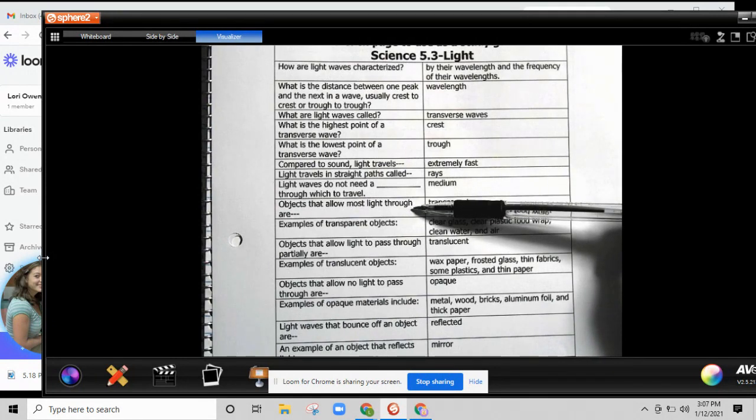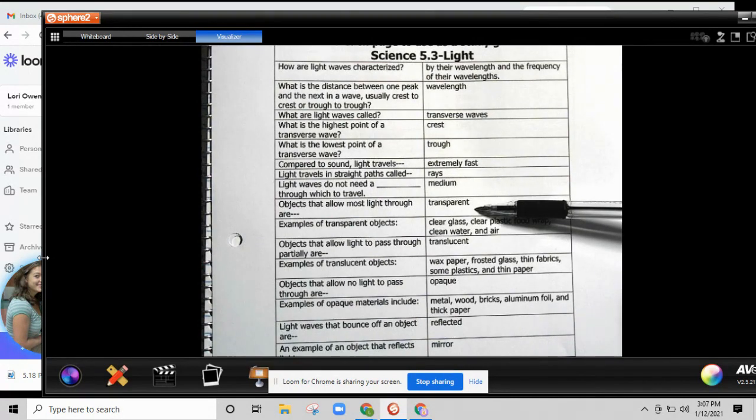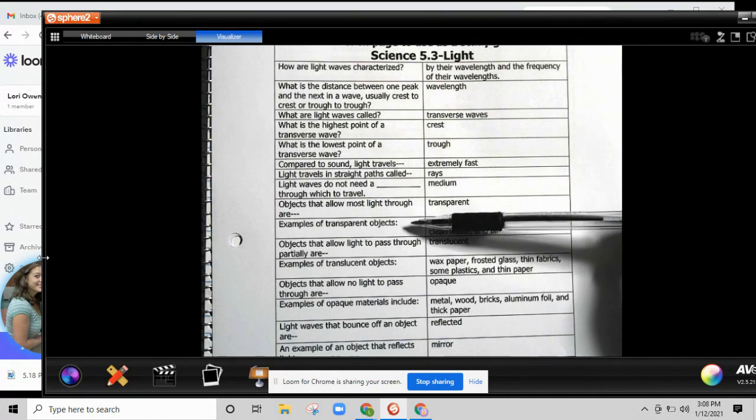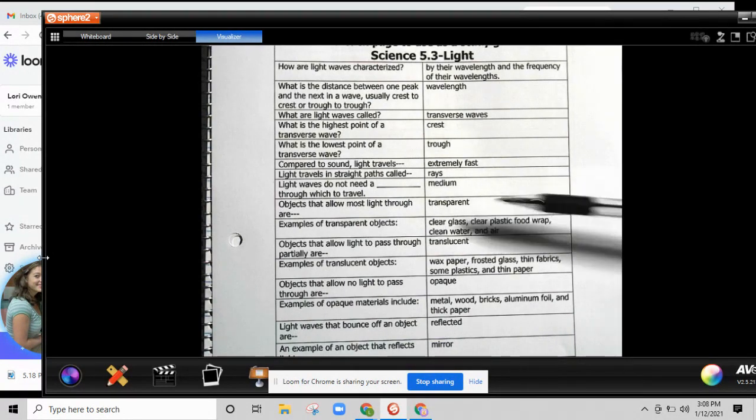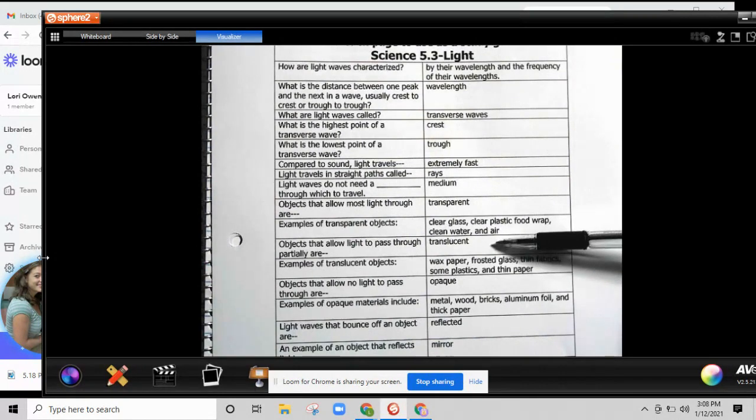Objects that allow most light through are transparent. Examples of transparent objects: clear glass, clear plastic, food wrap, clean water, and air.